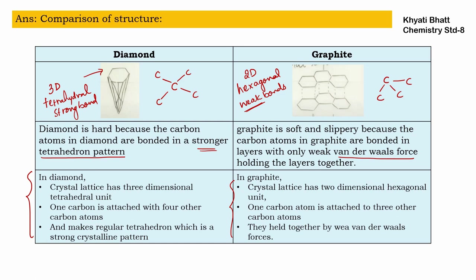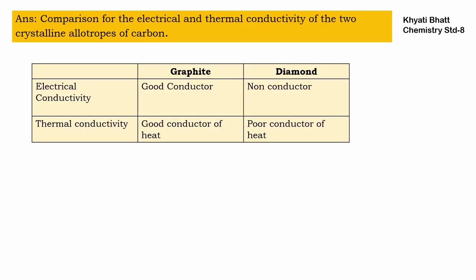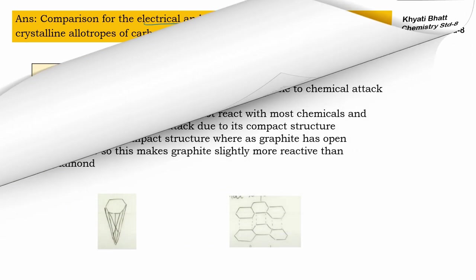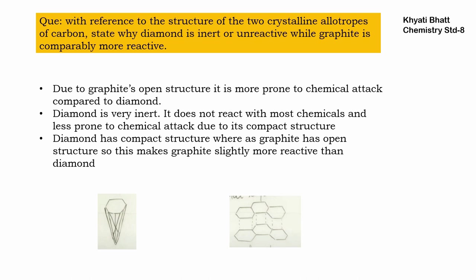Comparing electrical and thermal conductivity: graphite is a good conductor of both electricity and heat. Diamond, for electricity, is a non-conductor — it cannot conduct electricity — while for heat it is a poor conductor.